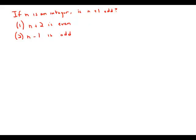If n is an integer, is n plus 1 odd? Statement number one tells us that n plus 2 is even. Let's think about this. We know that if we take an even number and add 2, we get an even number. We take an odd number and add 2, we get an odd number.